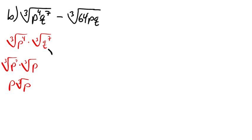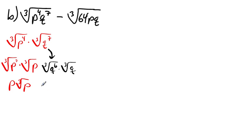Now for the third root of q to the seventh: 3 goes into 7 two times, so we rewrite it as the third root of q to the sixth times the third root of q. Then 6 divided by 3 is 2, so the third root of q to the sixth becomes q squared. We're left with q squared times the third root of q.